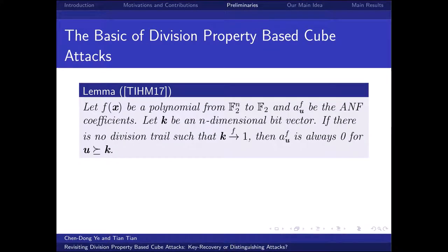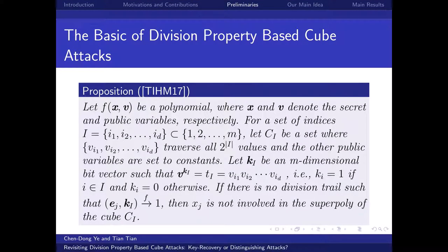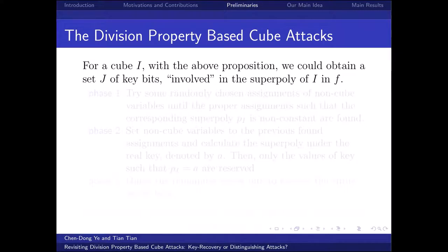Based on this concept, the division property can be used to analyze the ANF coefficients of a boolean function. Specifically, for an n-dimensional binary vector u, if there is no division trail starting from K to 1, then the coefficient of x^u is always zero. Following this lemma, Todo and other researchers proposed a proposition: let F be a polynomial and I be a cube set. If there exists a division trail from the vector formed by e_J and k_I to 1, then key variable x_J is involved in the superpoly of I in F. Based on this, one can determine a set J containing all key variables involved in the superpoly.